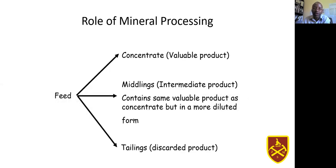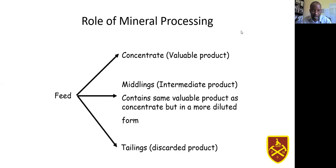Let's look at the role of mineral processing. We said we want to liberate and concentrate. You have your feed ore or feed material, and after processing you produce your concentrate, which is the valuable material. Then you have the middlings, which is an intermediate product containing a little of the wanted material together with the unwanted — you might need to re-concentrate or discard depending on the economics. And then you have the tailings, which are the unwanted product — the stream containing mostly gangue minerals that should be discarded.